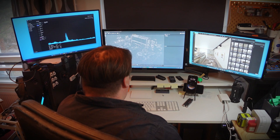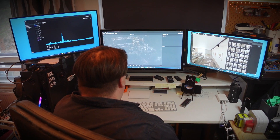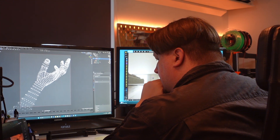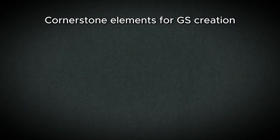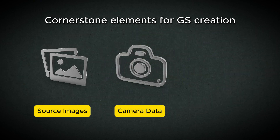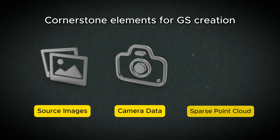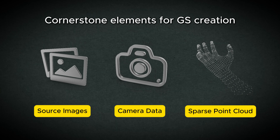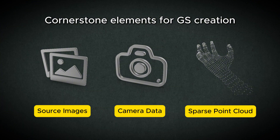After all the different experiments, I have understood that in this new 3D production method, the main ingredients and the most important parts are the source images, the cameras and their camera location data, and this so-called sparse point cloud. All three of these elements play an important role in the process where we are trying to generate 3D Gaussian splatting models.